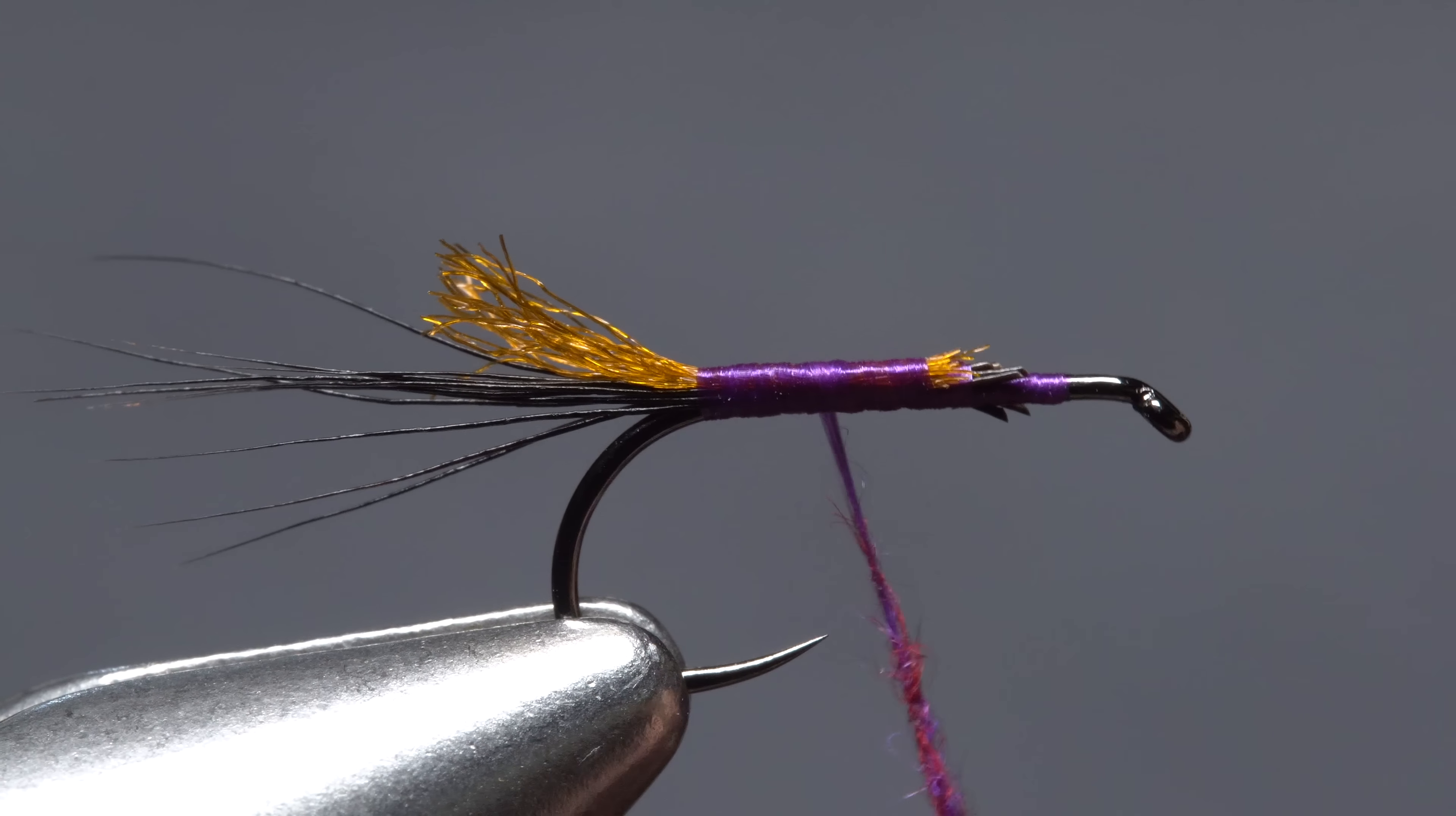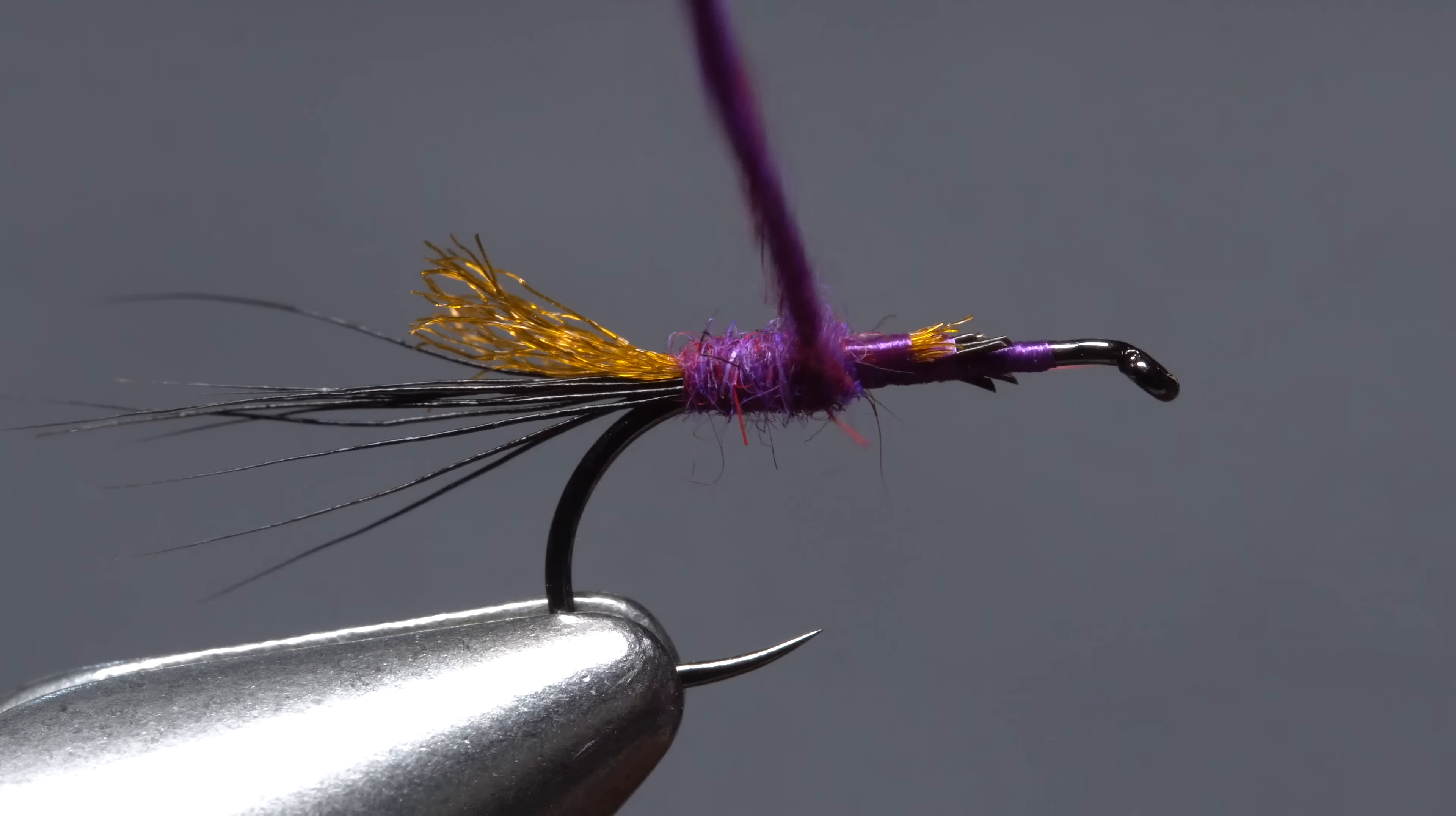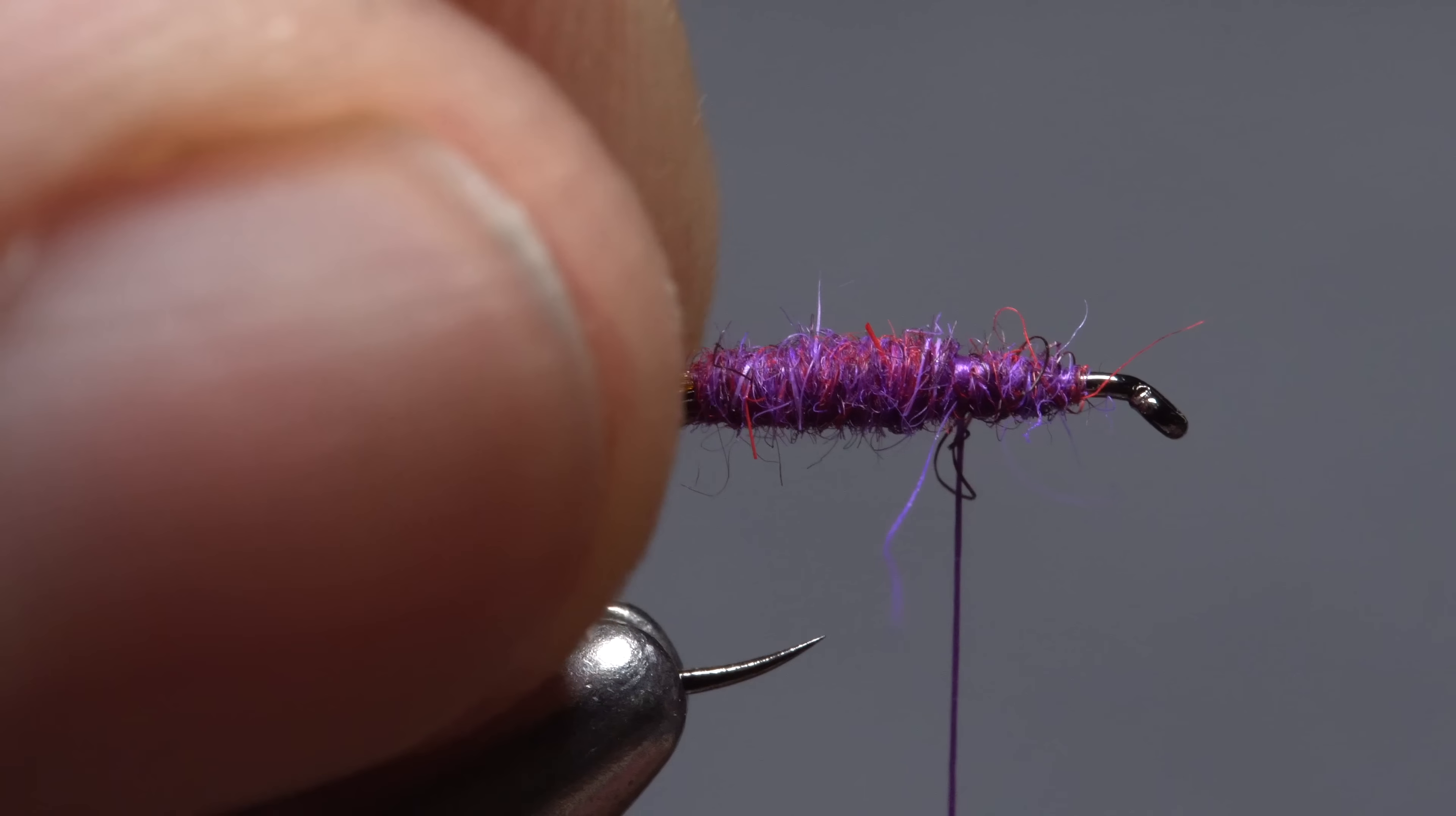Start taking wraps with the noodle so the dubbing begins right at the base of the tail. Continue taking touching wraps forward up the hook shank to build up a nicely tapered abdomen on the fly. Keep taking wraps over top of the butt ends and all the way up to the initial tie-in point. Then take a few turns rearward to establish the back end of the fly's thorax.